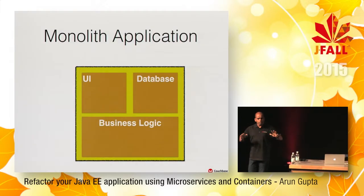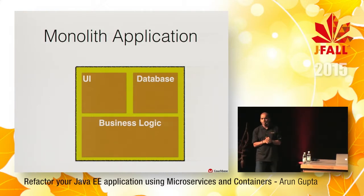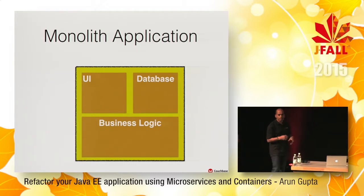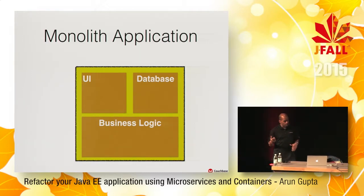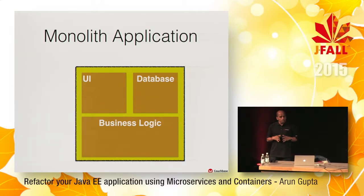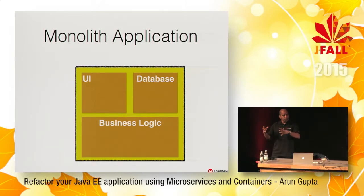I'm not going to go into the story line. Bert did a wonderful job of explaining the red pill and the blue pill part of microservices. I'm going to jump straight into what is a monolithic application. A typical monolithic application is a three-tier Java EE application, packaged either as a WAR or as an EAR file. As part of that archive, you have typical three-tier UI, database, and presentation.